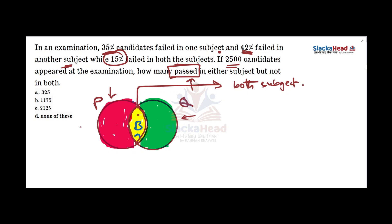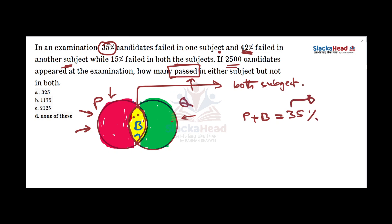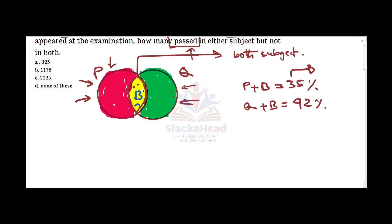Each circle contains the yellow portion, meaning the whole circle for P includes students who failed only P and also those who failed both. So P plus B equals 35%, and similarly Q plus B equals 42%, because each circle contains the overlap portion — the both-subject percentage.